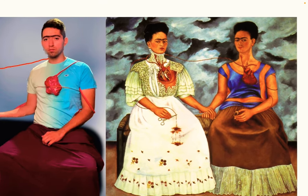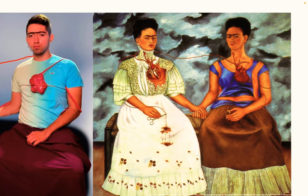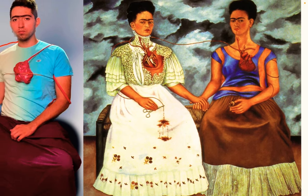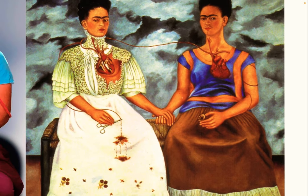This is a painting done by Frida Kahlo and it represents her physical and emotional pain when she was married to Diego Rivera. It's two different Fridas representing two different versions of her. One of them has an exposed heart and is seen as a representation of her suffering. The other one is a healthier sense of self and strength.